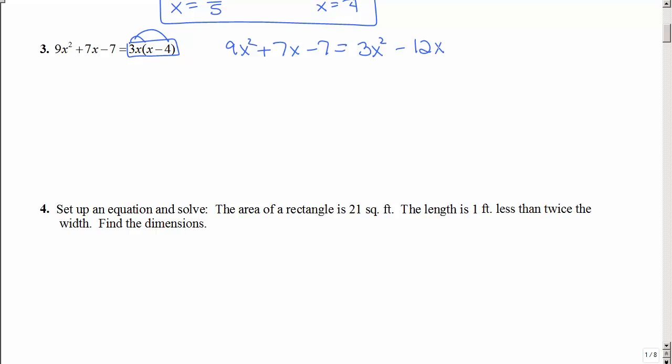Now I want to get it all to one side of the equal sign and have a zero. So I'm going to move everything to the left. And that also keeps my x squared terms positive. So I have 6x squared plus 19x minus 7. You could see that does indeed equal zero.